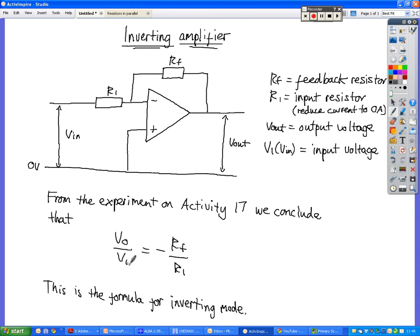So you can use that to calculate missing values of voltage. Or if you've got both the voltages, you can use it to calculate a missing value of resistance. So you need to be able to look at this and say, OK, that's inverting mode. It's inverting mode because this resistor here is connected to the inverting terminal, which is the negative terminal. And you need to be able to apply this equation to that sort of situation as well.